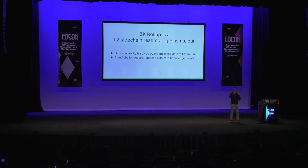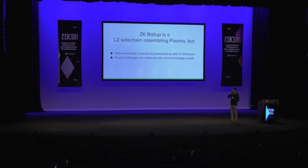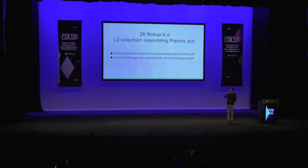ZK Rollup — I was trying to explain it in a very short manner in one sentence. It's a layer-two scaling solution, essentially a sidechain resembling Plasma MVP, with two key differences. The first is that we solve the data availability problem by putting the data directly on the layer-one chain — we rely on Ethereum to broadcast the data to everybody. The second difference is that we replace fraud challenges of Plasma with zero-knowledge proofs, which guarantee that everything we changed in the data is correct.